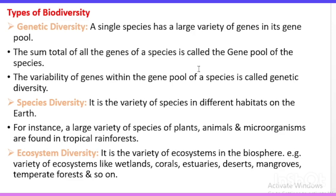Basically, biodiversity is divided into three types. The first is genetic diversity. Genetic diversity is the type of biodiversity where every individual of a specific species is different from each other in terms of genetic makeup. A single species has a large variety of genes in its gene pool. The sum total of all genes of a species is called the gene pool, and the variability of genes within the gene pool is called genetic diversity.